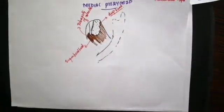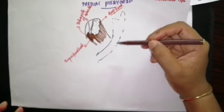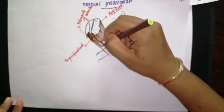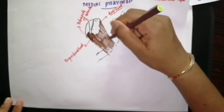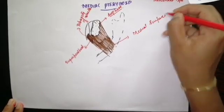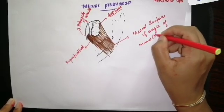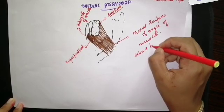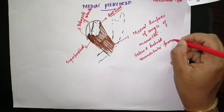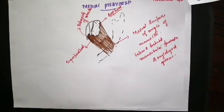The deep head takes origin from the medial surface of the lateral pterygoid plate and adjoining parts of the palatine bone. The muscle gets inserted into the rough area on the medial surface of the angle of the mandible and the adjoining ramus of the mandible, below and behind the mandibular foramen and the mylohyoid groove.